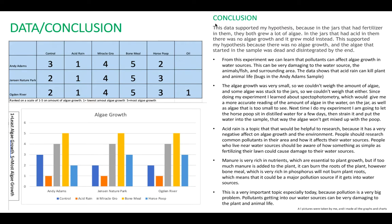So my data supported my hypothesis because the fertilizer increased the algae growth and the acid rain decreased it. It actually killed the bugs in the water samples. For the acid rain, Andy Adams' one had bugs in it, and they actually died very quickly, as well as the oil one, because they suffocated because there was no air and things couldn't get through. Also no sunlight.